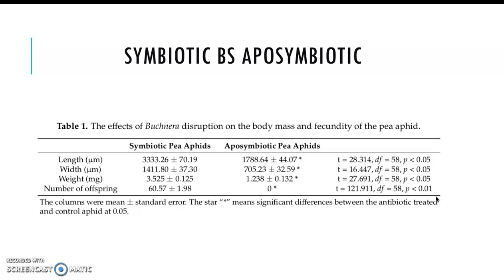In another study, researchers wanted to see what else Buchnera influences in the aphid. They treated aphids with different antibiotics and found that the length and weight of the aphid without Buchnera decreased significantly — approximately a 50% decrease — while the number of offspring reduced by 100%, meaning that if Buchnera was removed, they were not able to produce any offspring.